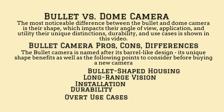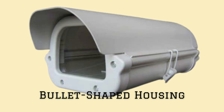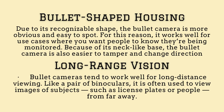Bullet Camera Pros, Cons, and Differences: the bullet camera is named after its bar-like design. Its unique shape offers benefits as well as points to consider before buying. Due to its recognizable shape, the bullet camera is more obvious and easy to spot. For this reason, it works well for use cases where you want people to know they're being monitored. Because of its neck-like base, the bullet camera is also easier to tamper with and change direction.